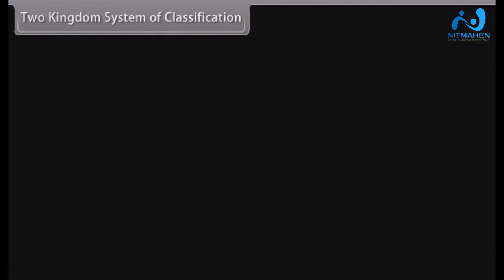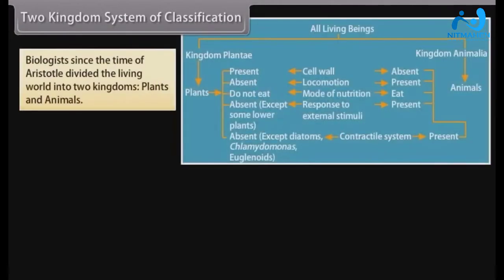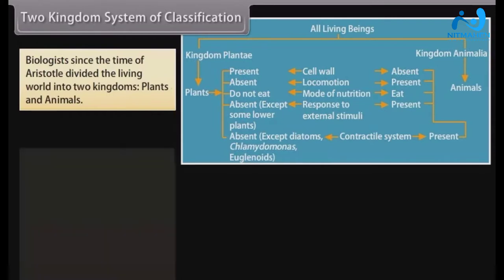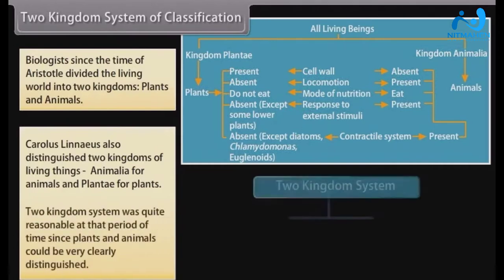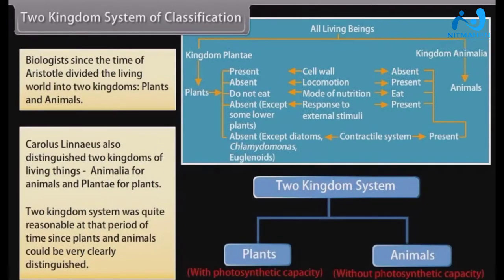The Two Kingdom System of Classification: Biologists since the time of Aristotle divided the living world into two kingdoms — Plants and Animals. Carolus Linnaeus also distinguished two kingdoms of living things: Animalia for animals and Plantae for plants. This two-kingdom system was quite reasonable at that period of time, since plants and animals could be very clearly distinguished.